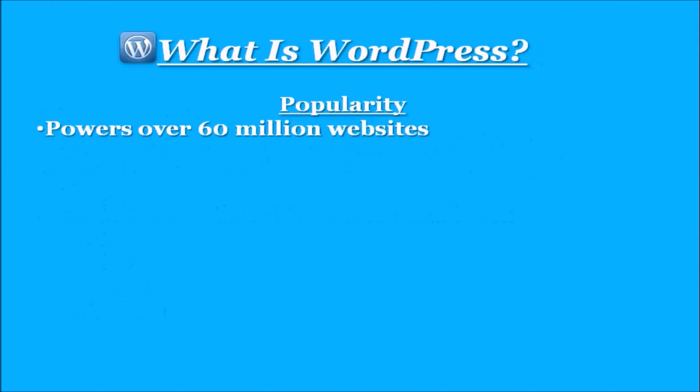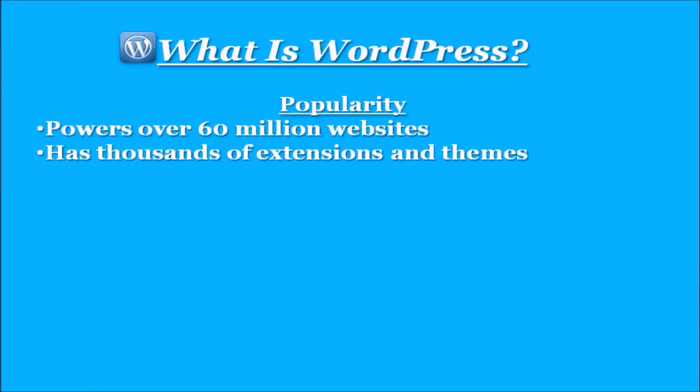WordPress has become increasingly popular and it currently powers over 60 million websites. It has thousands of extensions and themes, and this is what has really made WordPress so popular and powerful, because there are so many different layouts. You can create a beautiful website with themes, and the plugins really make WordPress so nimble — you can do pretty much anything with WordPress.